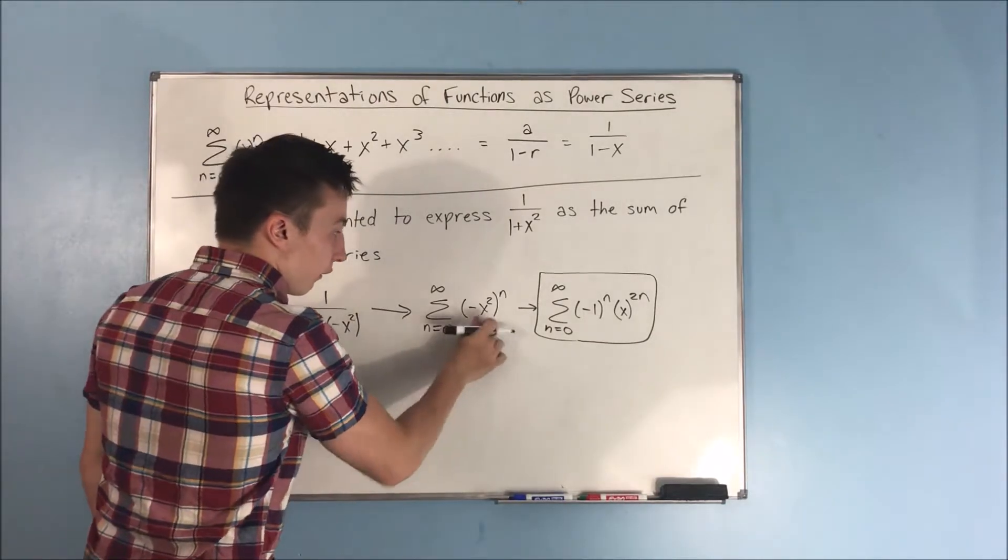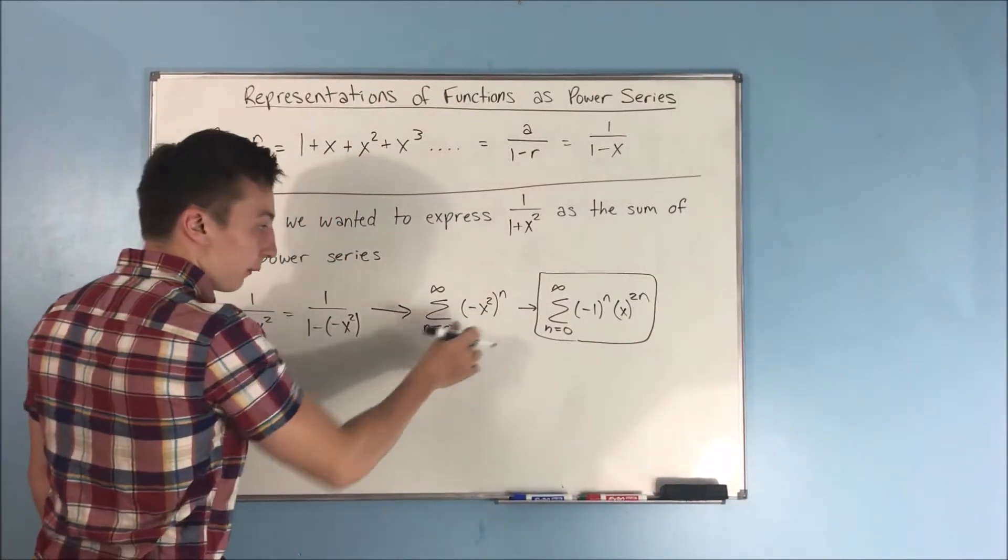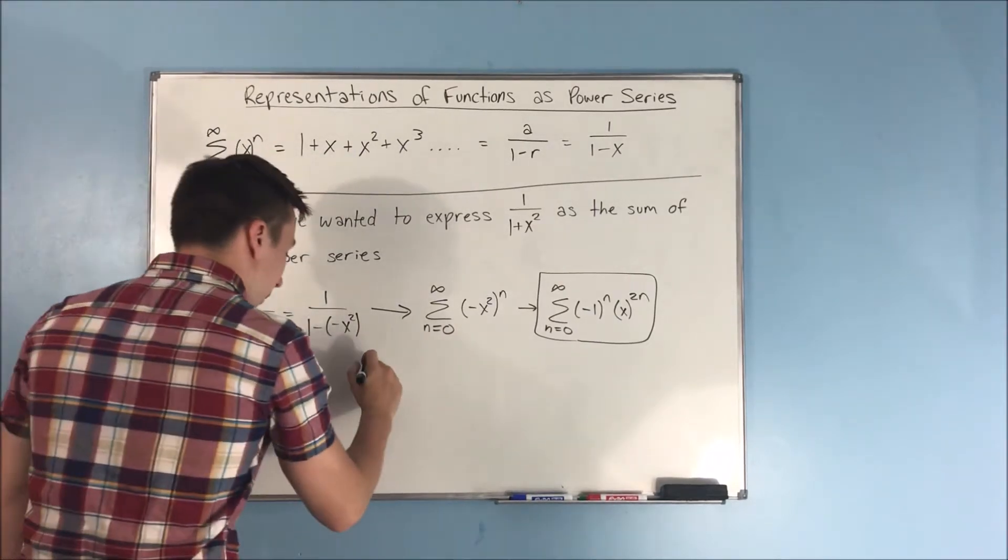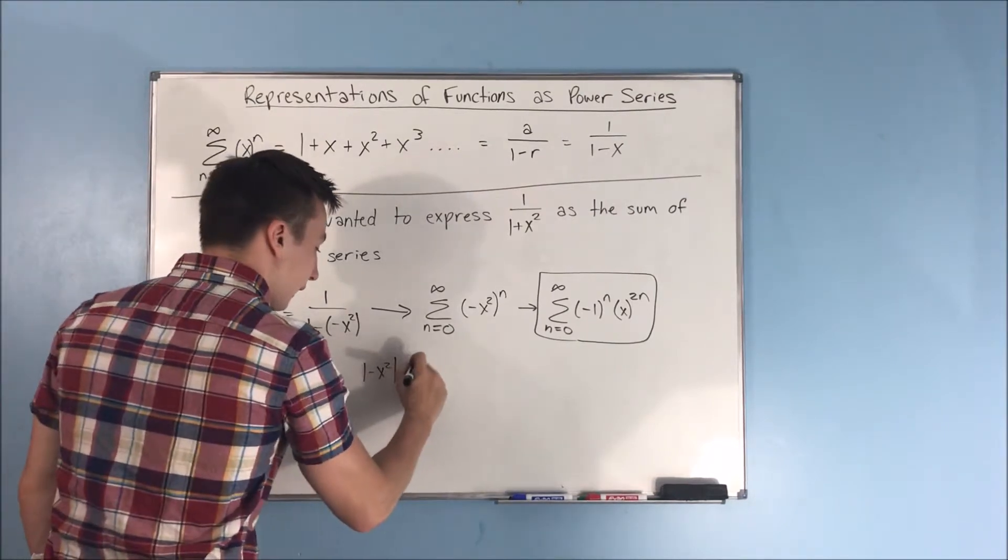Our common ratio, the absolute value of our common ratio, so the absolute value of negative x squared, is going to have to be less than 1.